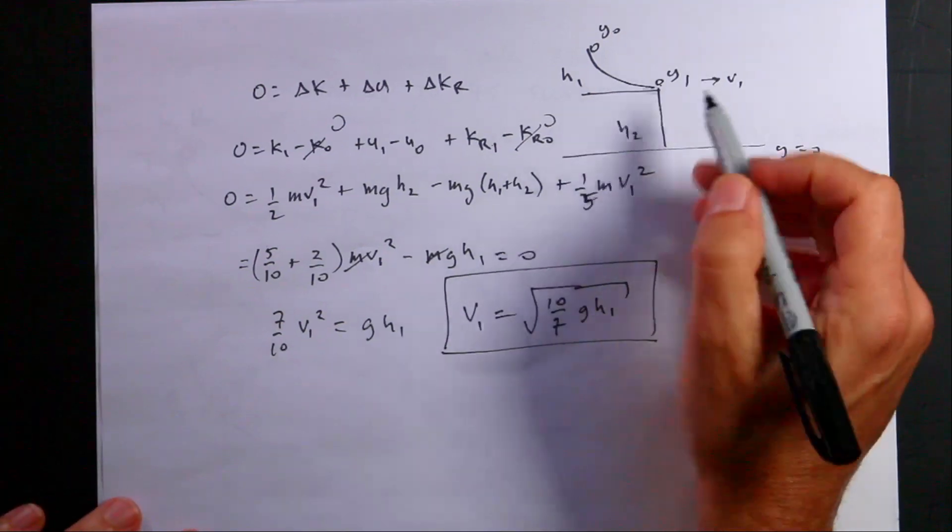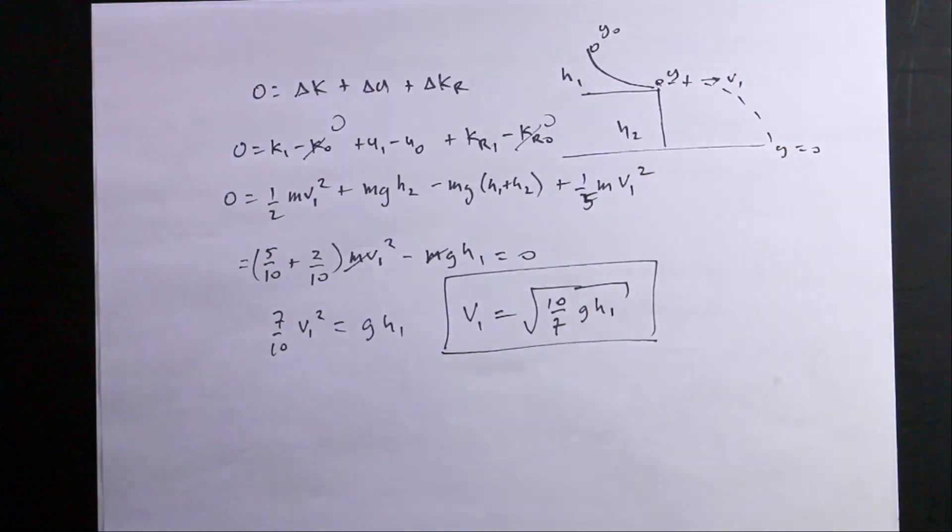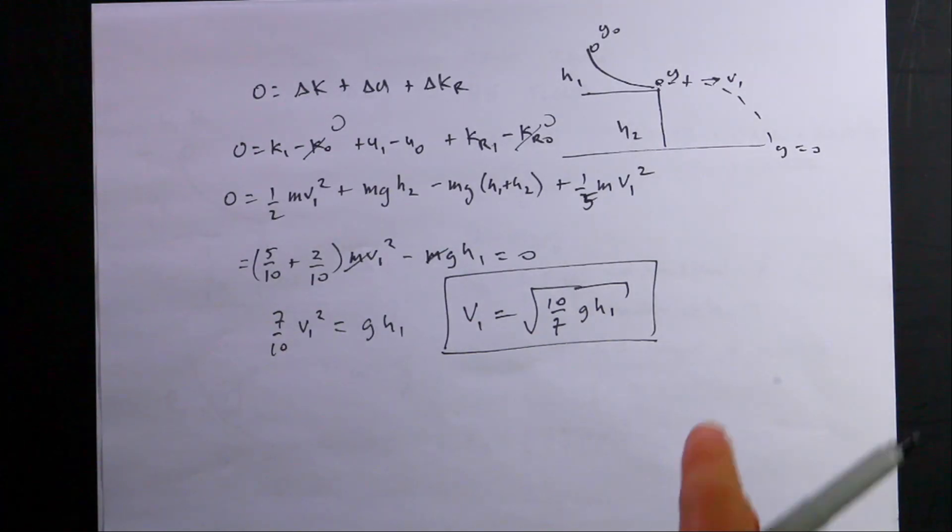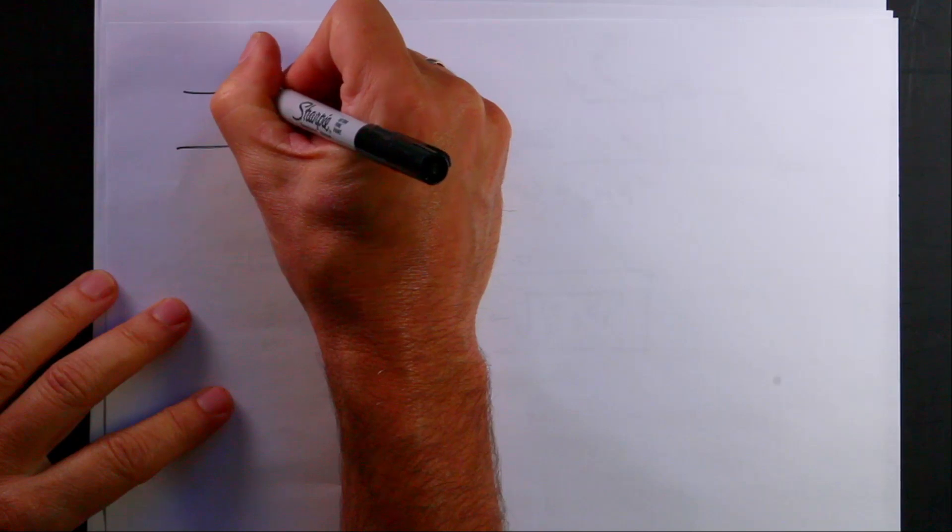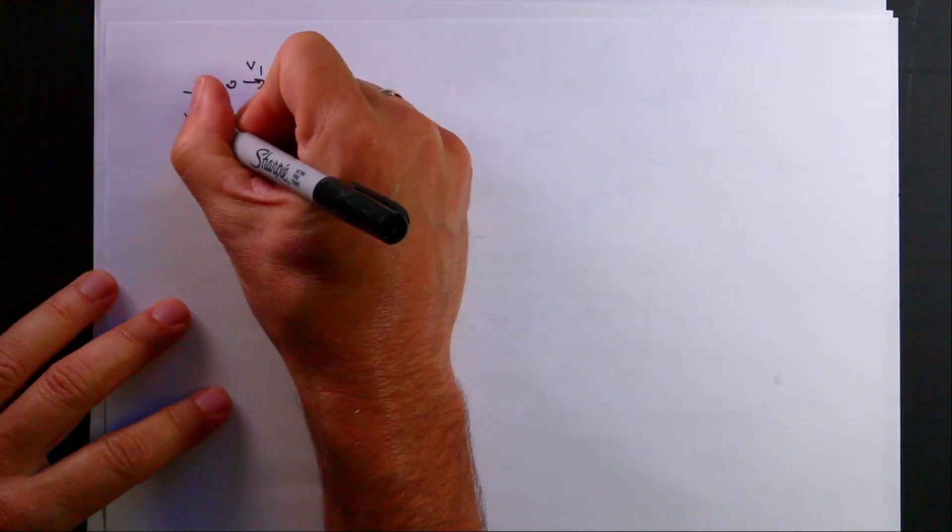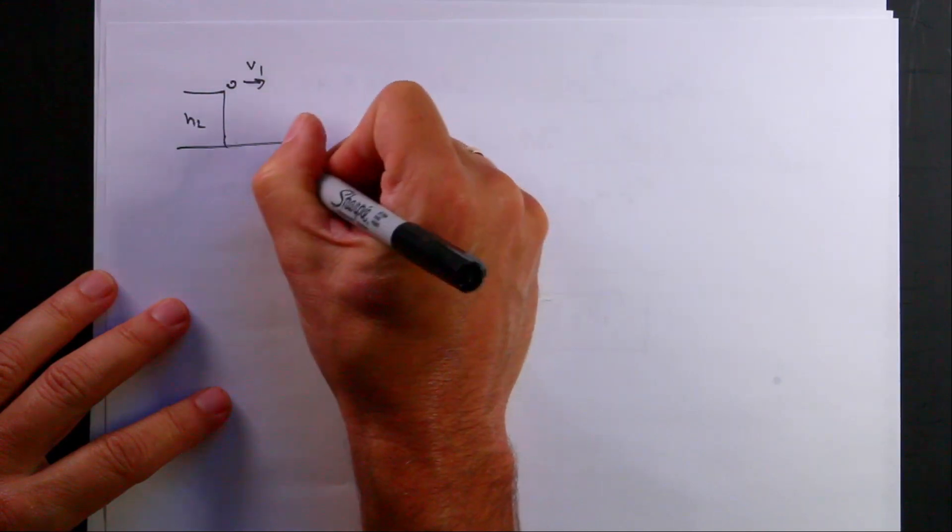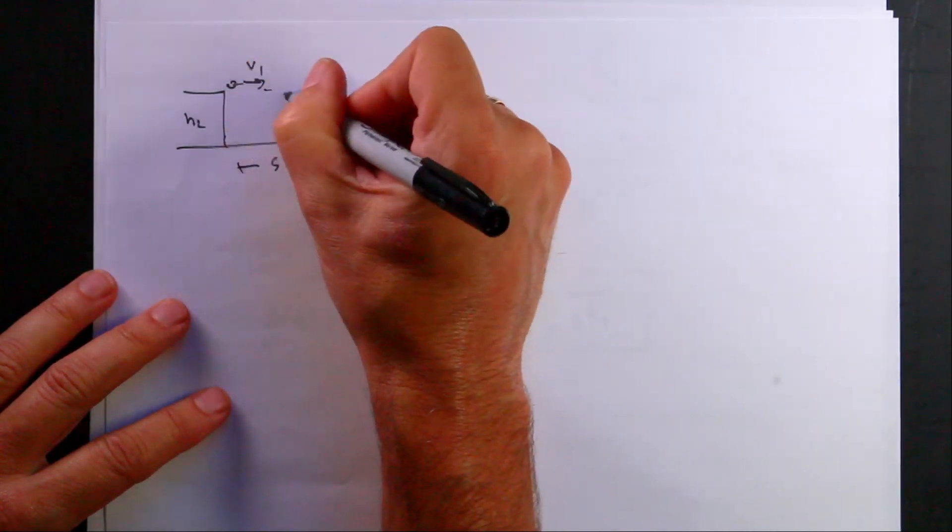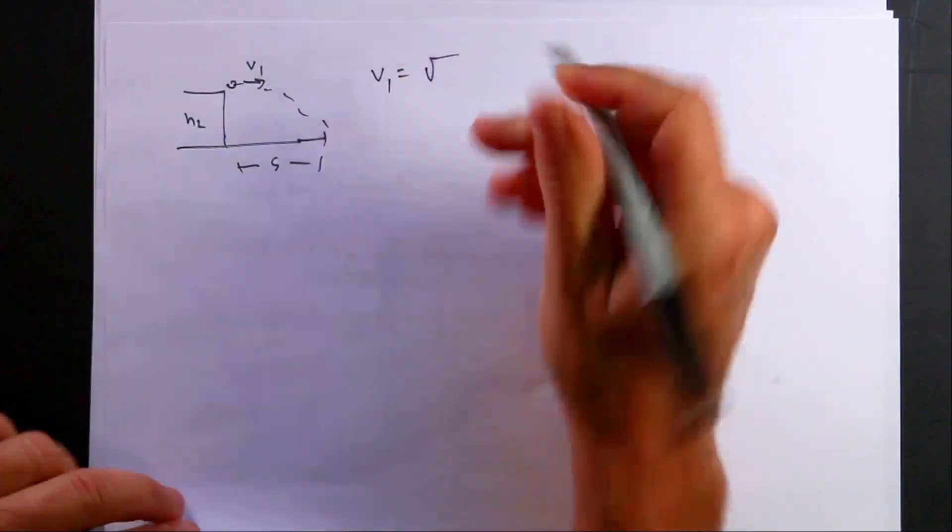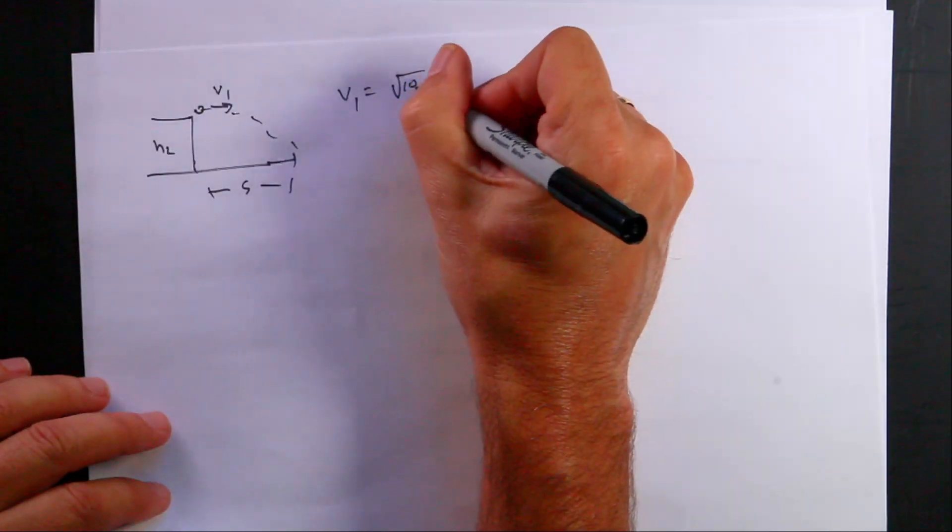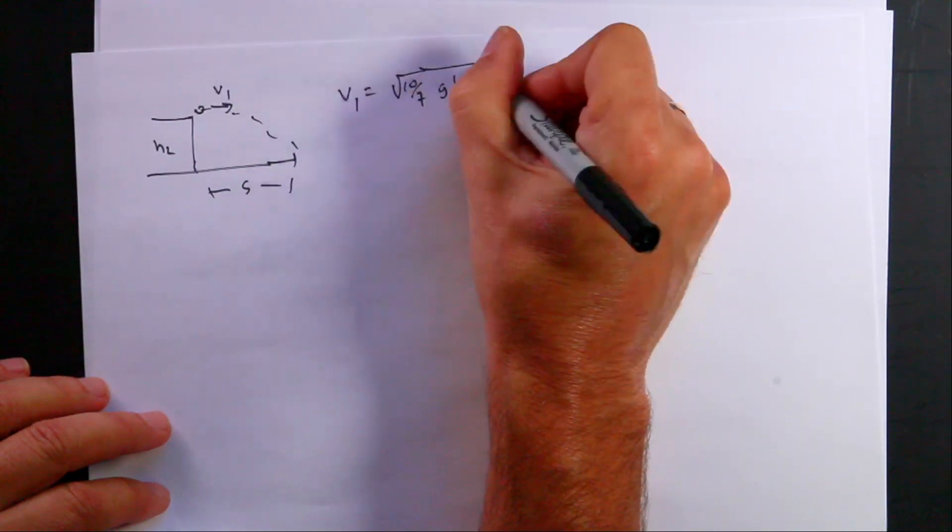Okay, so now I can move on to the second part, which is projectile motion. Now really, there's nothing that's going to change in this second solution except I'm starting with a different velocity, but I'm going to work it through the whole way anyway. So let me write this up here. This is v1, this is h2, and I want to find this distance, I'm calling it s. And for projectile motion, v1 equals the square root of ten-sevenths g h1.